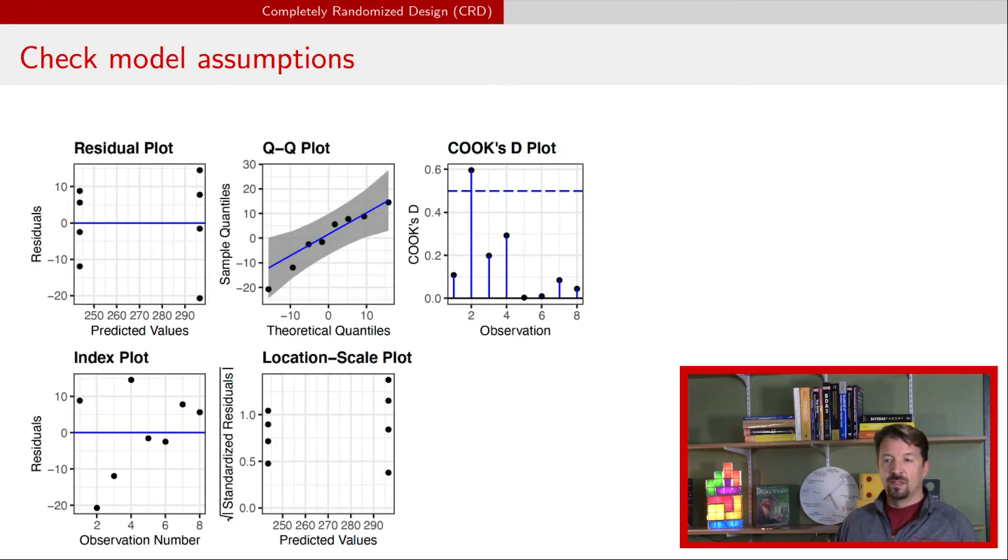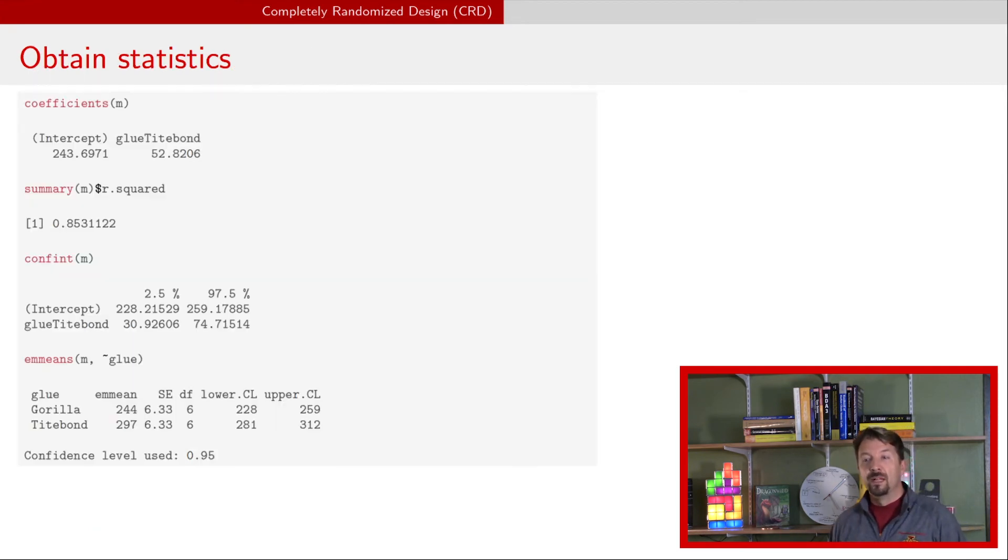We're going to fit a model we're going to look at some model diagnostics to make sure that it's a reasonable model. With only eight observations it's going to be pretty difficult to see glaring deviations from our model assumptions. These look fine so we'll move forward. We can obtain our statistics using that model so we have parameter estimates we have an R squared value we have confidence and credible intervals of those parameter estimates and then finally we're using the emmeans package in R to get estimated mean strength or mean weight needed to break those different joints.